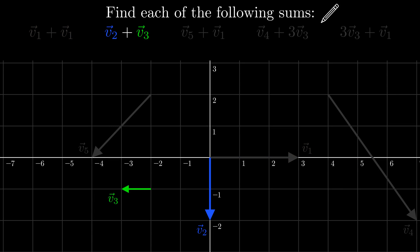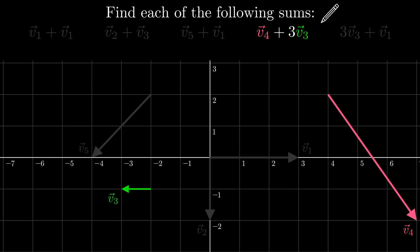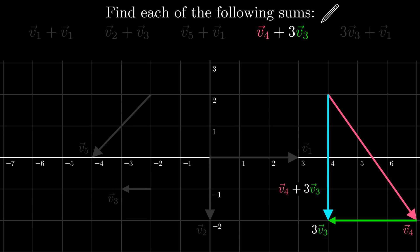Next, we will do v2 plus v3. We can just move v3 onto the end of v2; then the sum is the vector starting at 0 and going 2 units down and 1 unit to the left. For v5 plus v1, we just move v1 onto the end of v5; the sum goes 2 units down and 1 unit right. For v4 plus 3v3, we need to scale v3 by 3 first, then move that result to the end of v4; the sum is a vector going 4 units down.